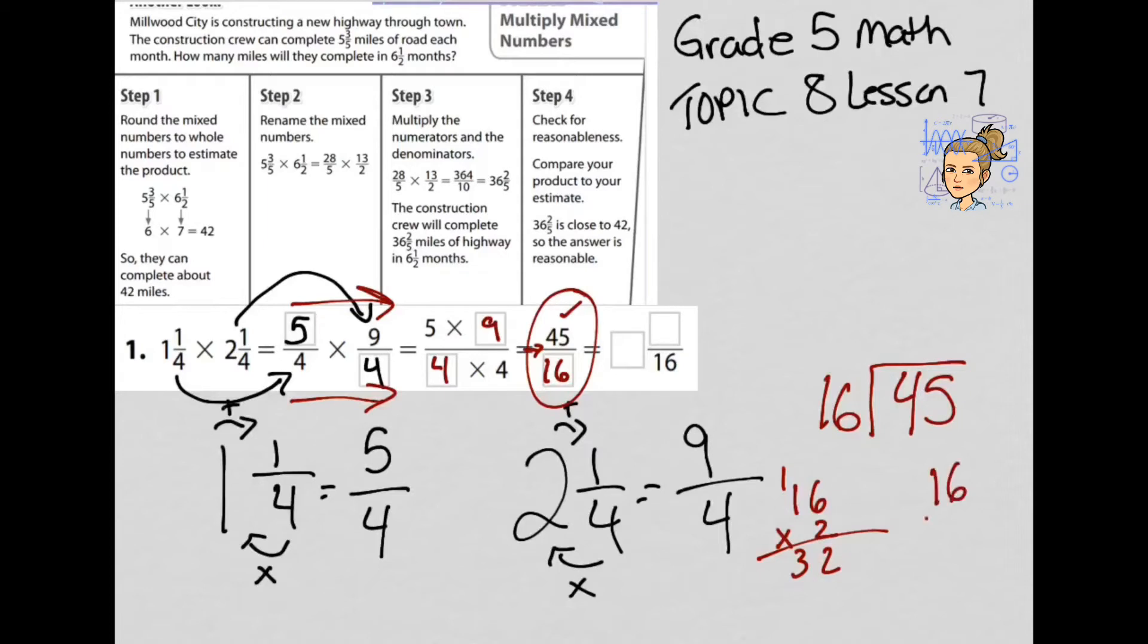Hmm, can I get closer? 16 times 3. 6 times 3 is 18, regroup my 1, 3 times 1 is 3, plus 1 is 4, 48. That's greater than 45, so I'm not going to use 3, I'm going to use 2. So now I look at 16 times 2 is 32. I subtract that from 45, 5 minus 2 is 3, 4 minus 3 is 1, so now I have 13.